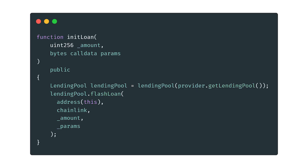In order to kick off the loan, we need a separate function. This will simply take the amount and any extra parameters. We create an instance of lending pool and call the flash loan method with this contract address, the Chainlink token address, the amount we want to borrow, and any extra parameters. And that's it. You can find more detailed documentation for flash loans and Aave's DeFi protocol on their website linked in the description.